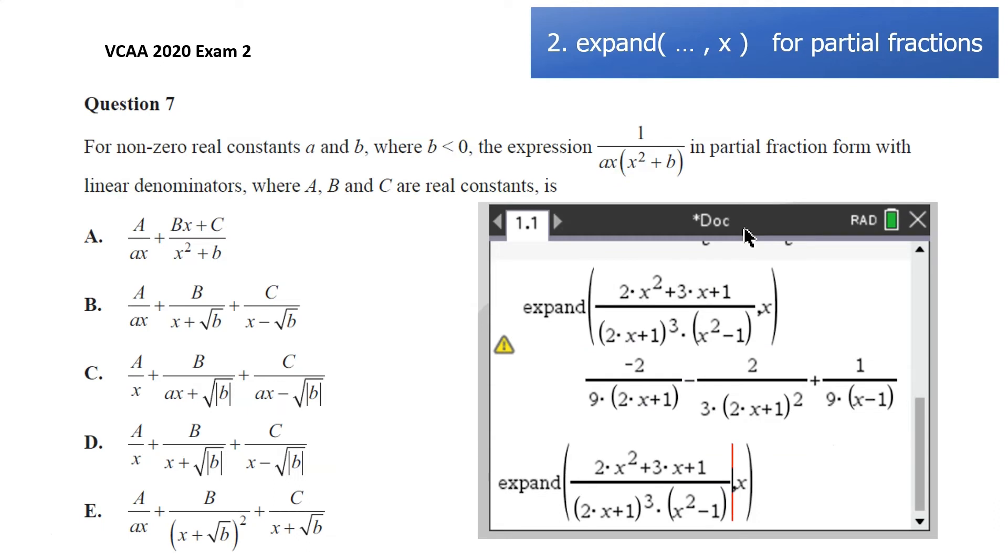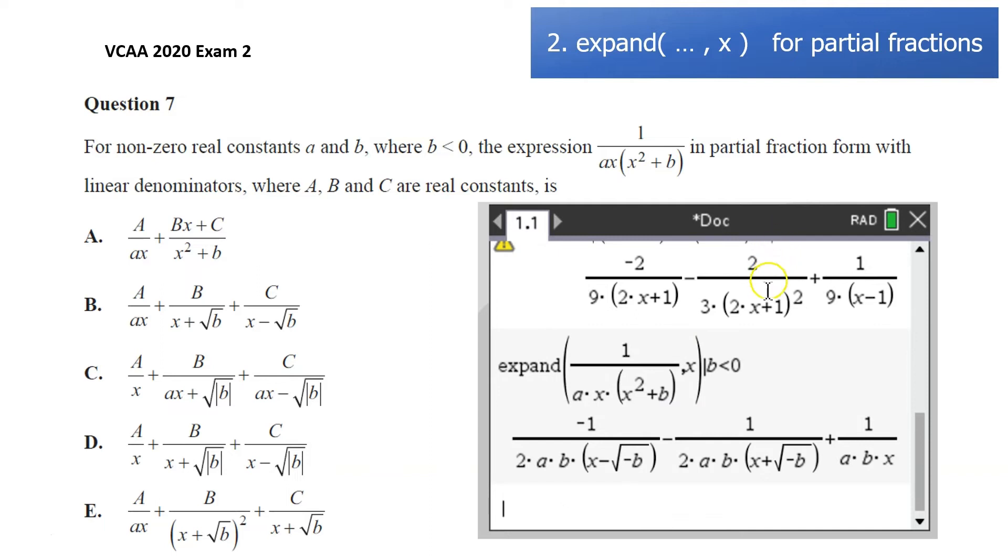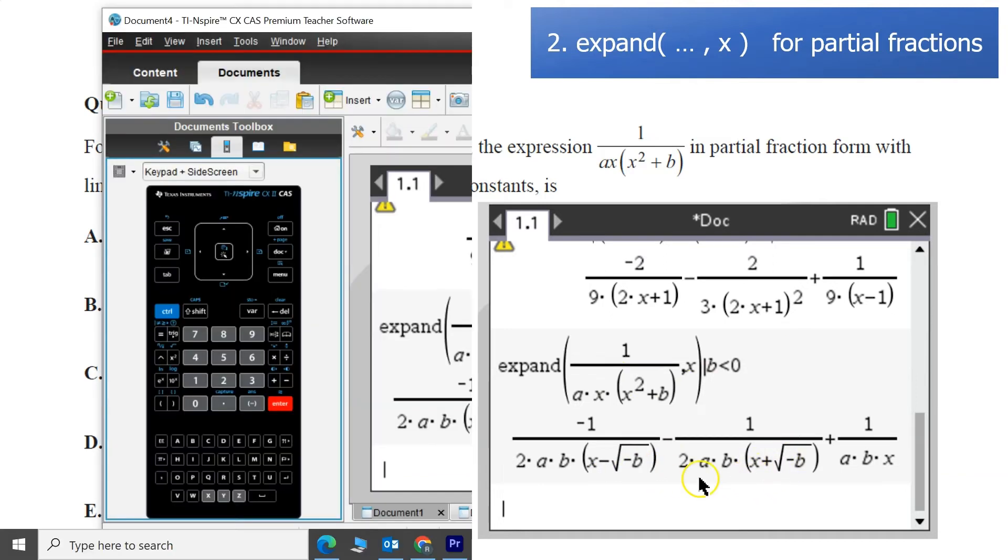Expand, just copy that one down, change it. 1 over ax, so again, a times x squared plus b. And yeah, I'm going to use that information, that b is less than 0. And when I do that, it actually realizes that this can be factorized into x minus square root something, x plus square root something, and that something is a negative b.